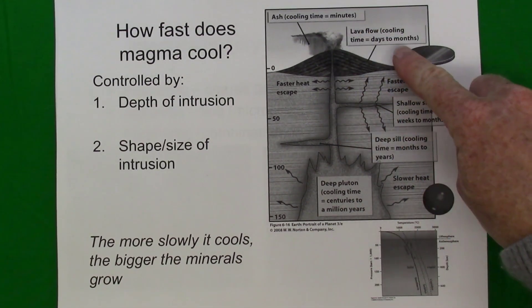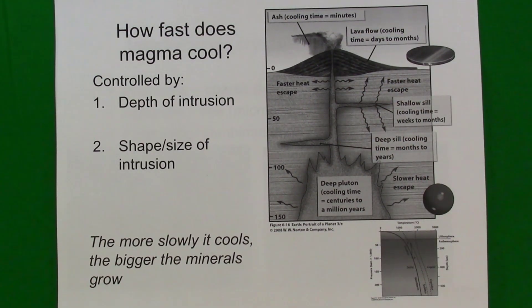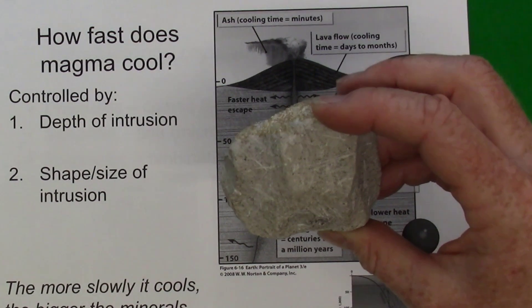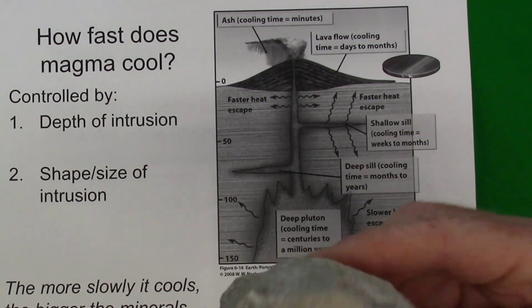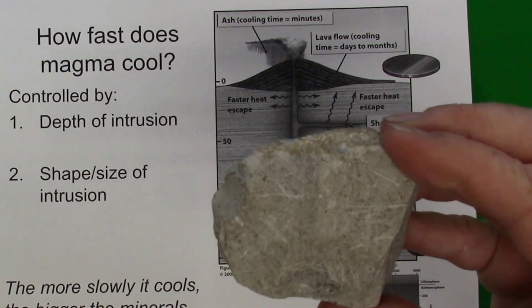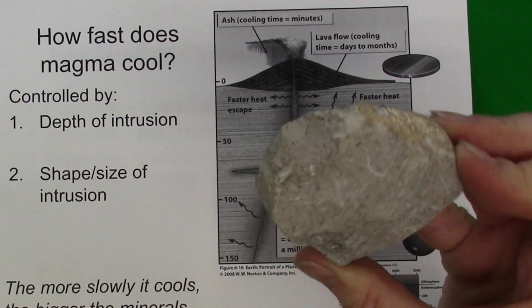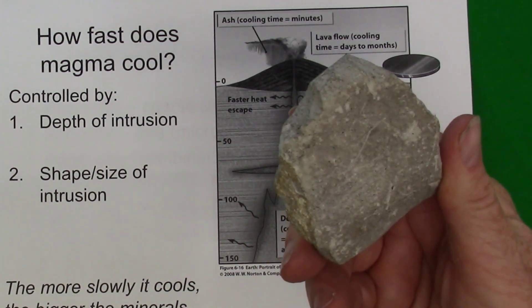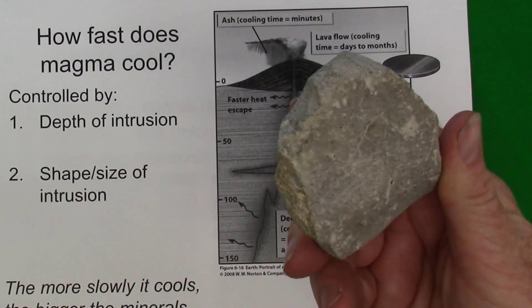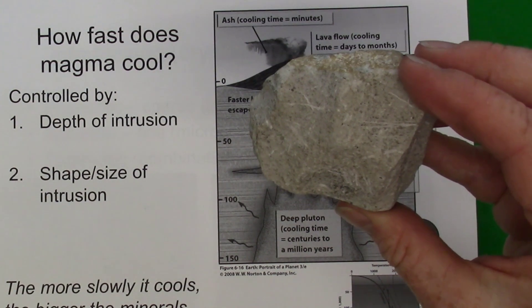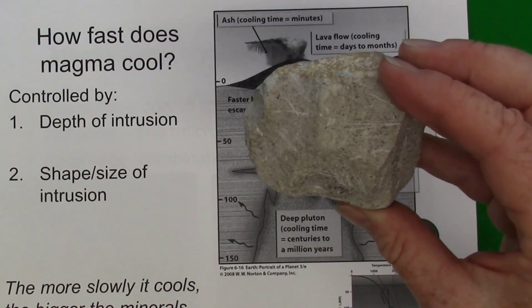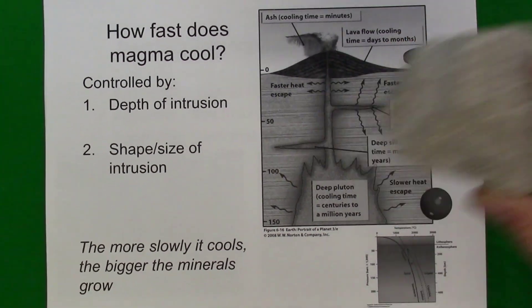If the magma makes it to the surface and flows as lava, then it cools in a matter of days or maybe months. This doesn't allow the minerals very much time to get large enough for us to see with the naked eye. So the rock tends to have less of a shiny look because the minerals are too small for us to see their cleavage and luster.